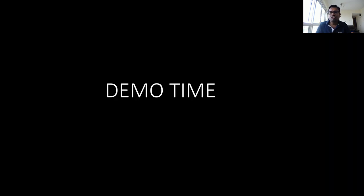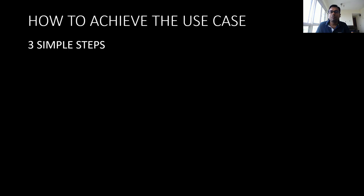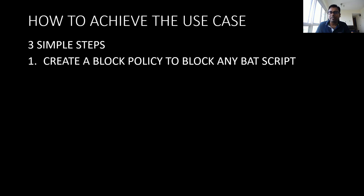Before the demonstration, I want to highlight that we will be configuring three different policies. We'll look at this entire use case step by step. The first step is we will create a block policy that will allow the administrator to block any kind of BAT scripts coming from any source, regardless of whether it is coming from a trusted or untrusted source.